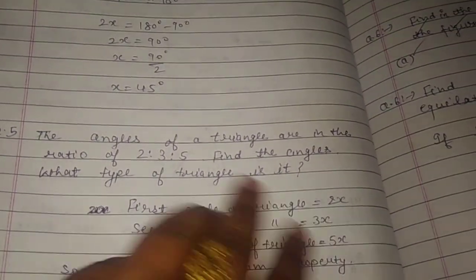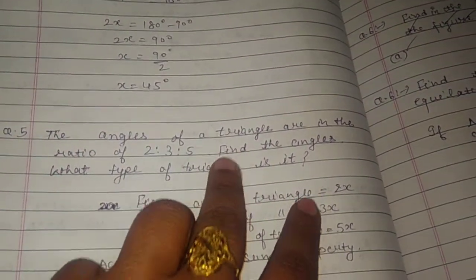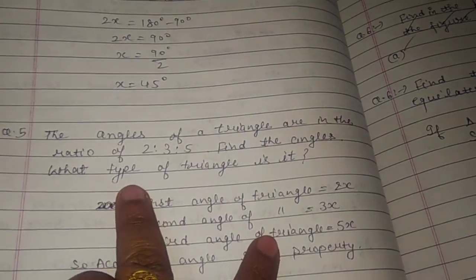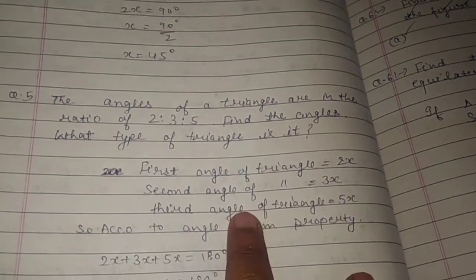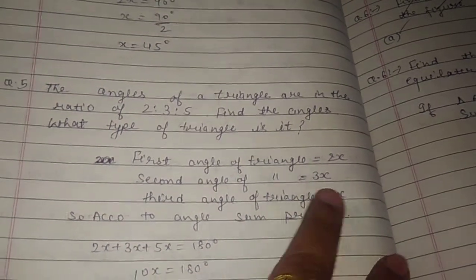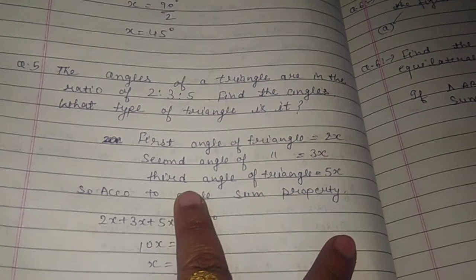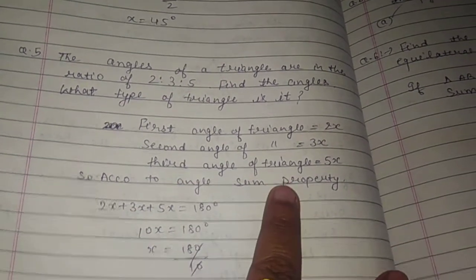Question number 5 of exercise 10.1. The angles of a triangle are in the ratio of 2, 3, 5. Find the angles. What type of triangle is it? First angle of a triangle equals 2x, second angle equals 3x, and third angle equals 5x.